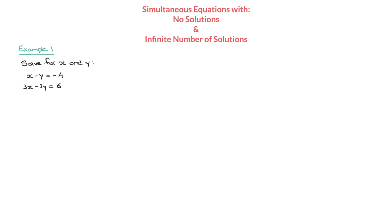For this first example, we're told to solve for x and y the two equations: x minus y equals negative 4, and 3x minus 3y equals 6. As always, when solving a pair of simultaneous equations like these, I start by labeling the two equations. I'll call the first one e1 for equation 1, and the second one e2.